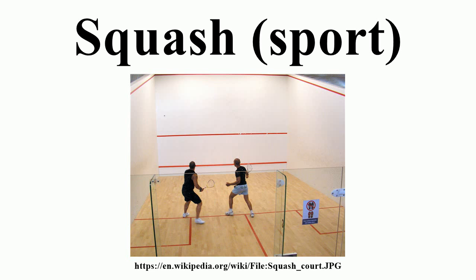Standard rackets are governed by the rules of the game. Traditionally they were made of laminated wood with a small strung area using natural gut strings. After a rule change in the mid-1980s, they are now almost always made of composite materials or metals with synthetic strings. Modern rackets have maximum dimensions of 686 mm long and 215 mm wide, with a maximum strung area of 500 square centimeters.